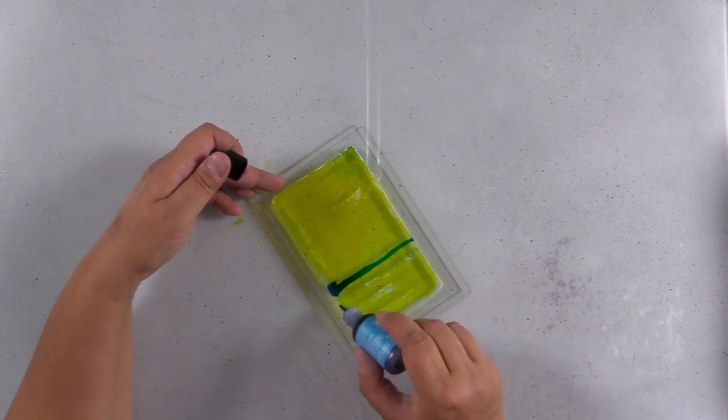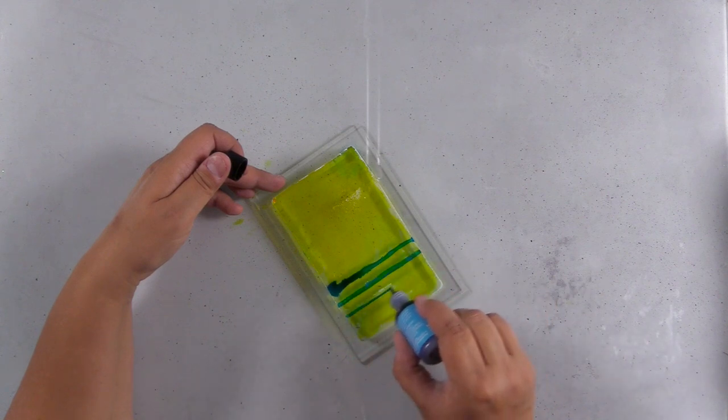So now I'm using denim alcohol ink. This isn't an alcohol pearl. This one doesn't stain. This is a beautiful denim blue color, and I'm just using it to create stripes.